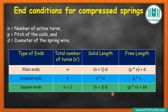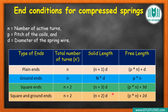For square and ground ends combined, total number of coils is again n plus 2, solid length is n plus 2 into d, and free length is p times n plus 2d. This last row is used in 90 percent of cases — so remember this row especially, as it is the most commonly used end condition.